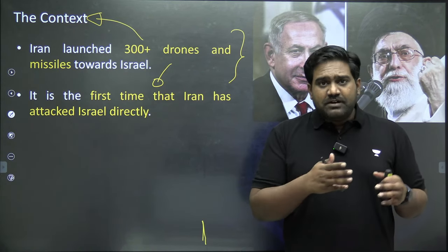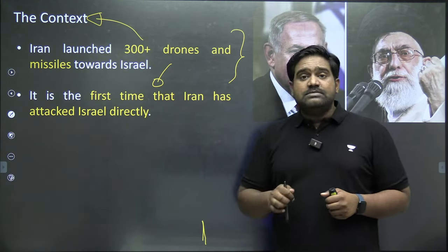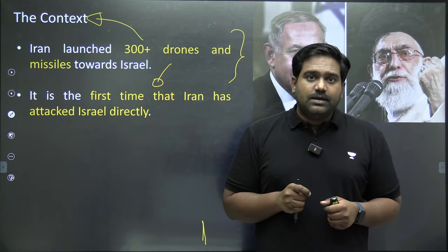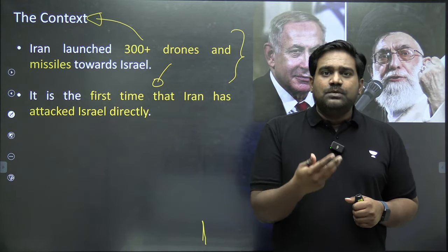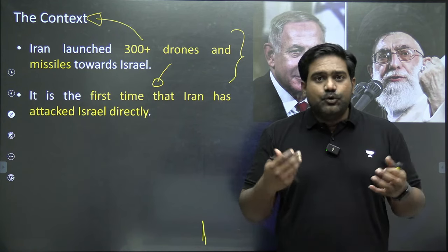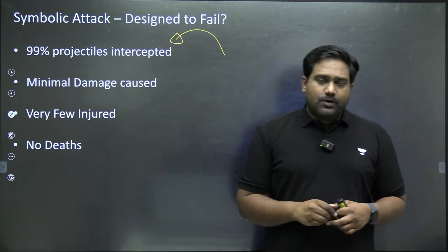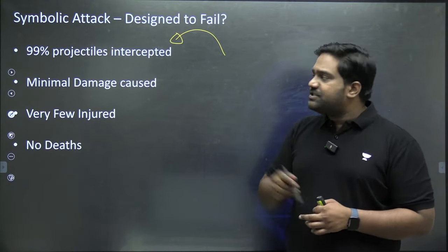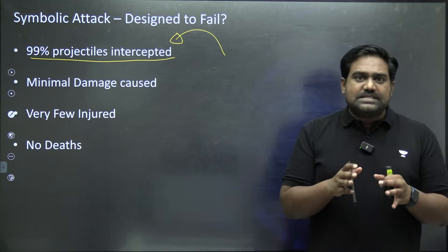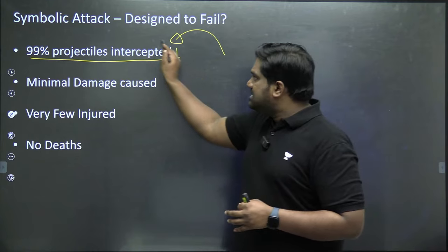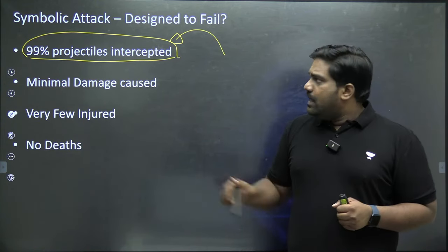Many of these missiles were launched from Iranian soil targeted towards Israeli territory. This becomes a significant escalation in West Asia. It has all the potential to escalate further and trigger a much wider regional conflict that could consume not just West Asia but the whole world as well.